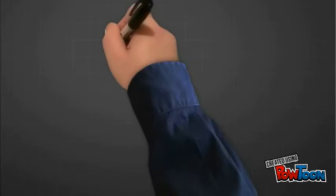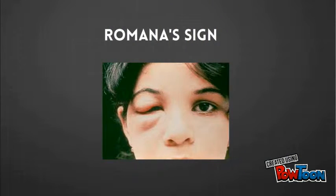One of the most telltale signs of infection is called Romana sign. This is shown right here as a swelling of the eyelid, indicating where the bug bit or where feces accidentally came into contact.